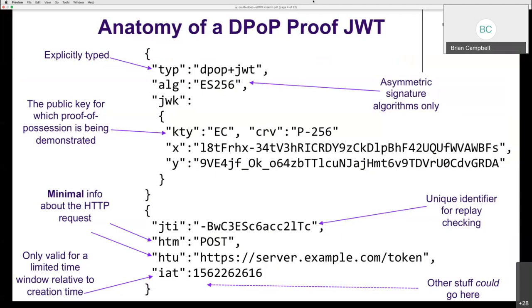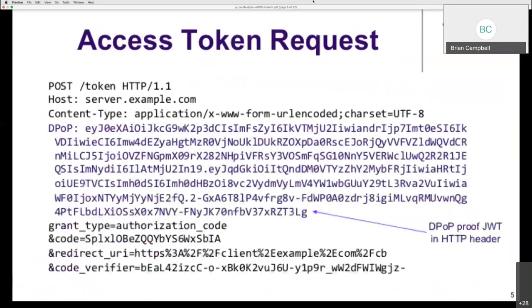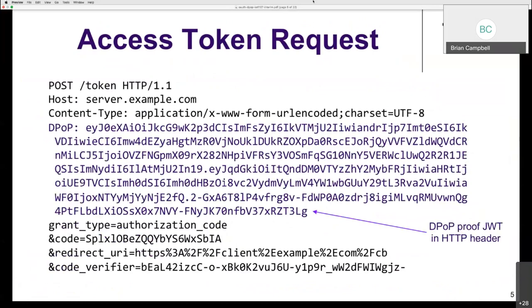There's a timestamp with conditions suggesting the proof only be accepted within a small reasonable time window relative to its creation time. In an access token request, the DPoP proof is sent as a DPoP header with the encoded JWT included directly. This proves possession to some extent of the private key corresponding to the public key in that proof, with respect to this particular request.